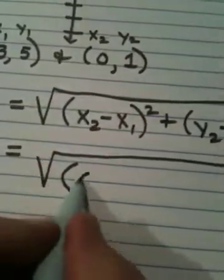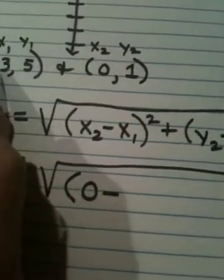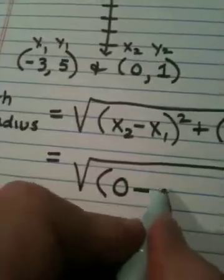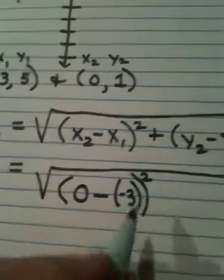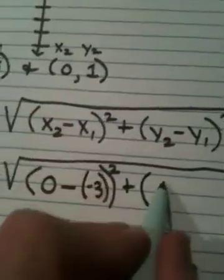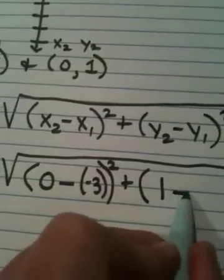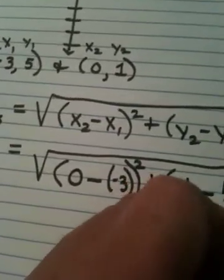x sub 2 is 0. Minus comes from the formula. x sub 1 is a negative 3. This is being squared. We put a plus. y sub 2 is 1. Minus comes from the formula. y sub 1 is 5. That's being squared.